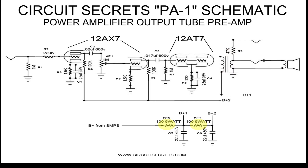R10 and R11 are both parts of the filter circuit. The B-plus for the 12AX7 is connected after both resistors to ensure maximum filtering at the earliest stage of the preamp. There is a filter between both B-plus supplies to help reduce sympathetic oscillations. C5 and C6 are the filter capacitors for the plate supply.